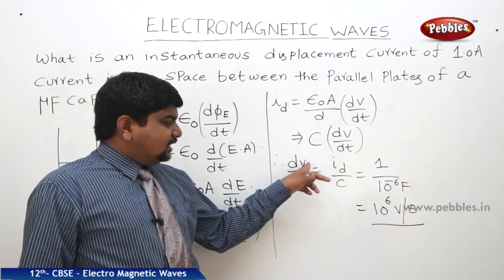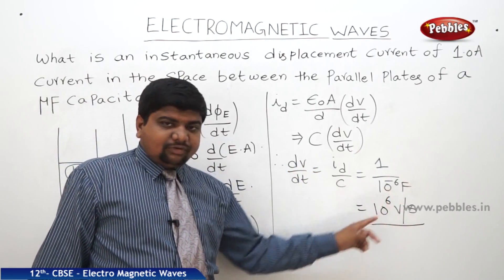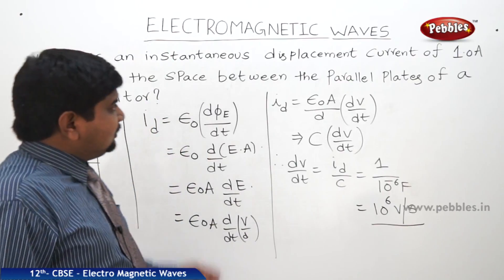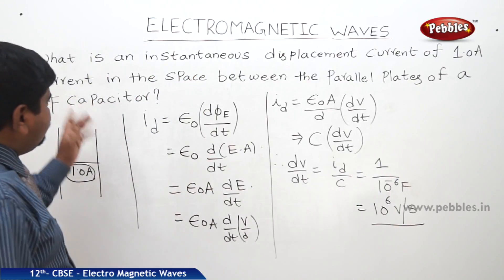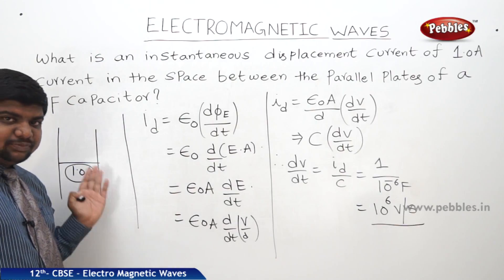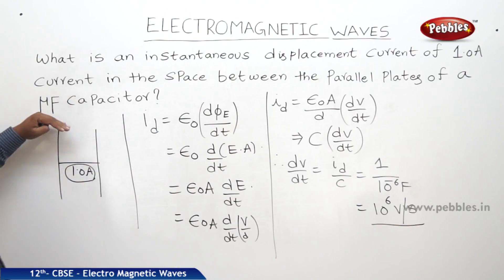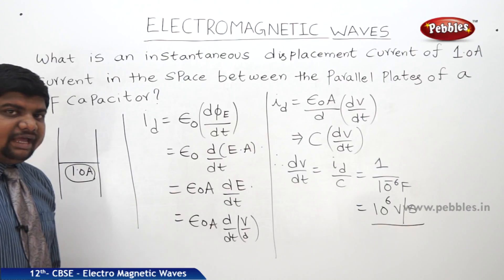So potential difference per unit time. We got 10 power 6 volts per second. So that is the instantaneous displacement current of 1A current which is present in between the space of the parallel plate capacitor with capacitance microfarad.